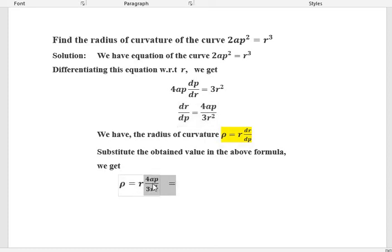So we get ρ = r(4aρ/3r²), which is nothing but 4aρ/3r when r and r² cancel. Now, substitute the value of ρ from the given equation.